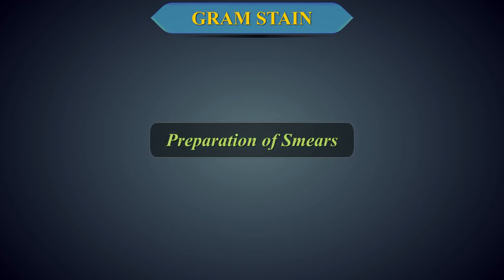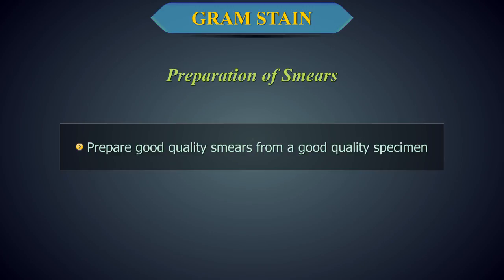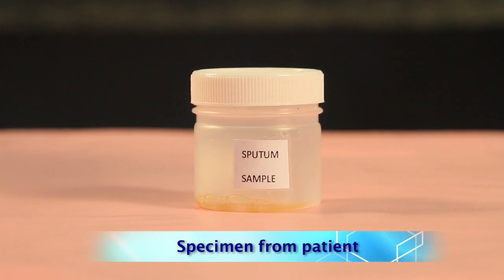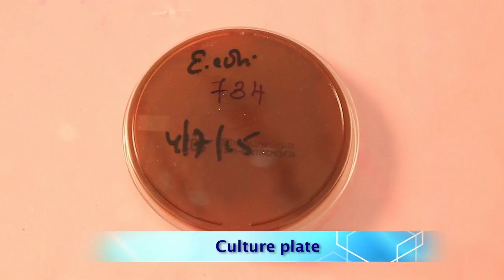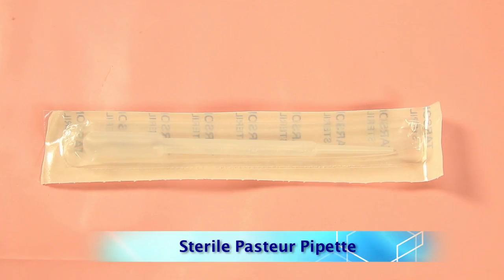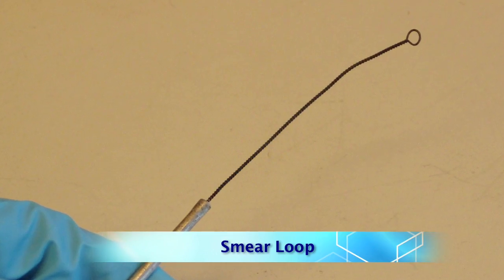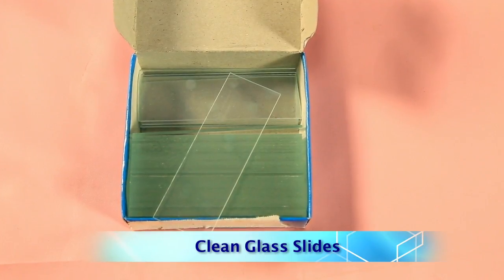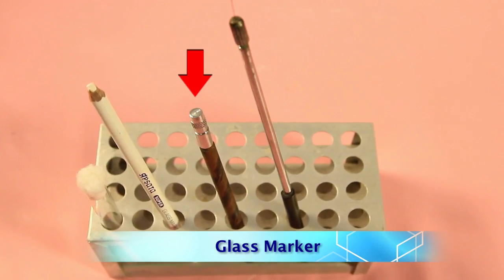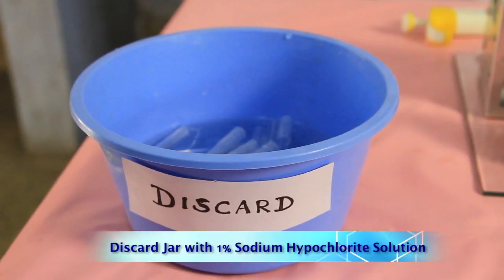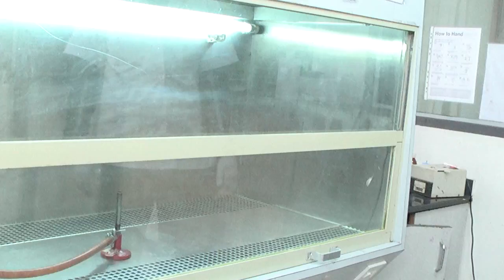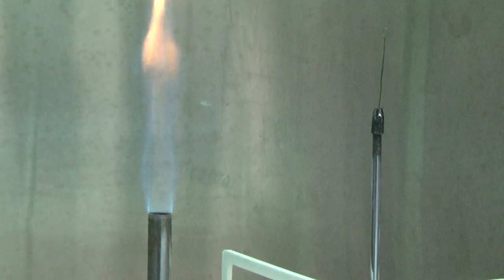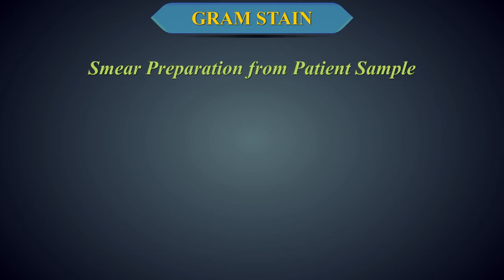Preparation of Smears. Before proceeding to staining, it is important to prepare good quality smears from a good quality specimen. Requirements: patient sample, culture plate with growth or broth culture, dropper or pipette, sterile inoculating loops, clean, dry, grease-free slides.